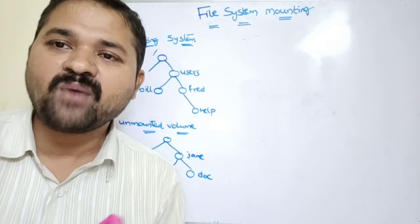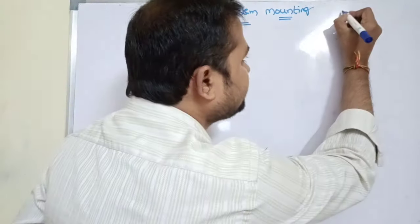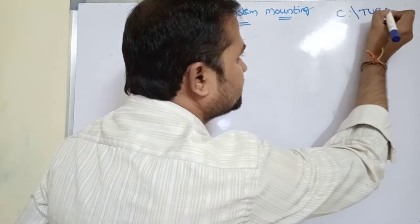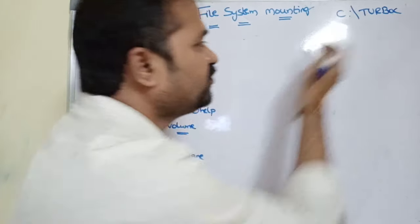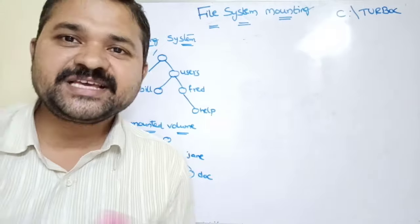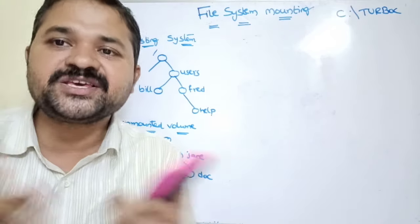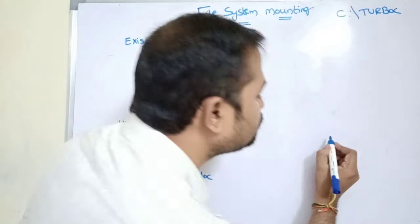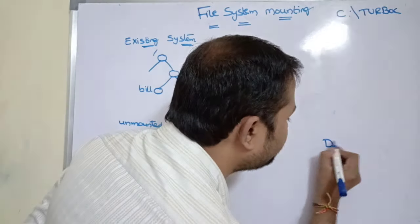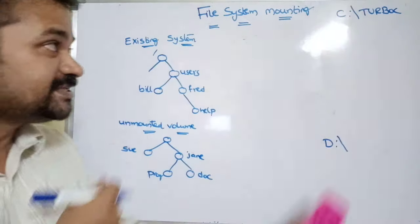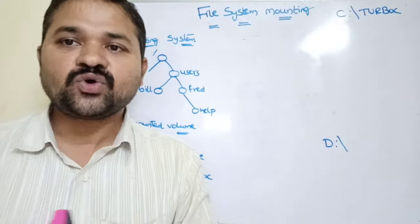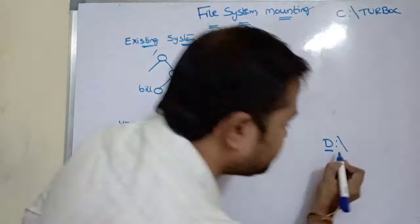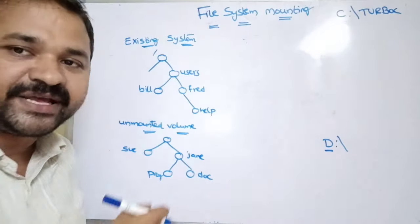Let us assume that we have Turbo C installed in the C drive. By using Turbo C we can execute C files. But let us assume that we want to execute those programs from D, however Turbo C is only available in C. So we have to attach these files to the D file system, and for that we use mounting.